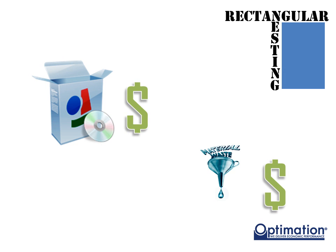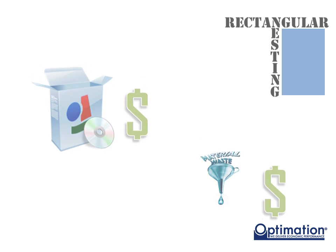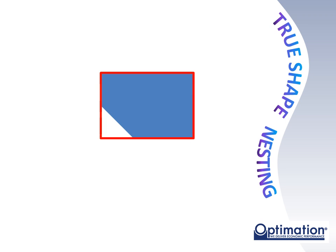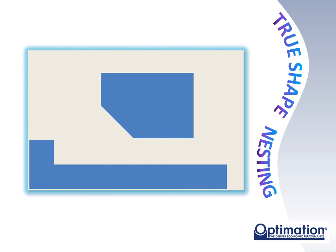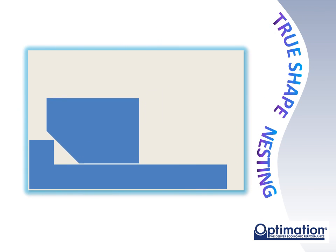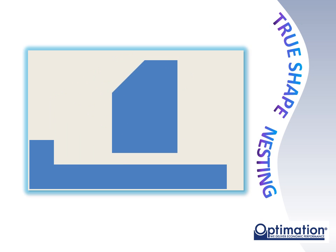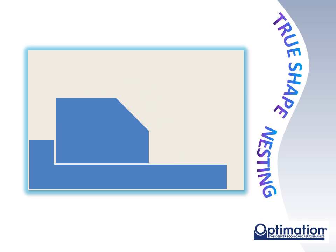The most common method of part placement available is referred to as true shape nesting or half shape nesting. It is called this because it uses the actual part's shape instead of the general outside rectangle of the previous solution. This method places a part on the nest and then attempts to move it as close as possible to the other parts. The system will attempt a number of rotations to determine which provides the best fit. Fit is defined as that solution that places a part's center of gravity closest to a datum point.